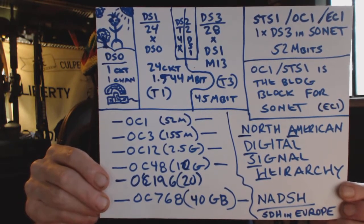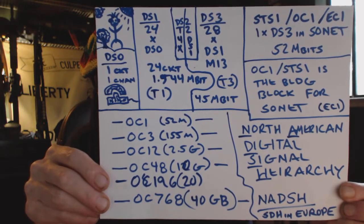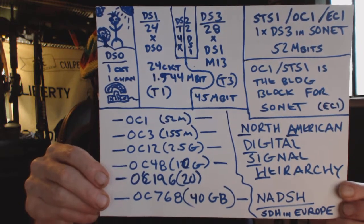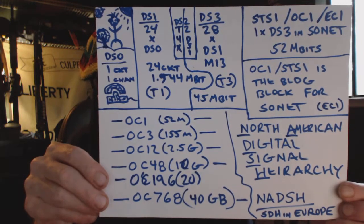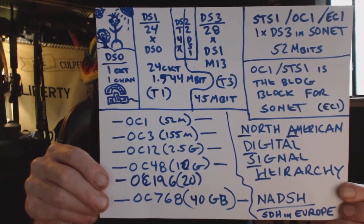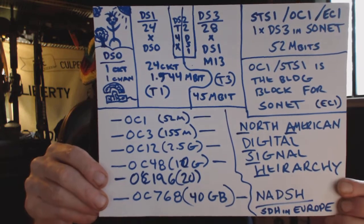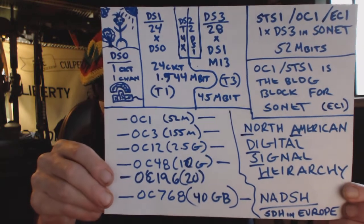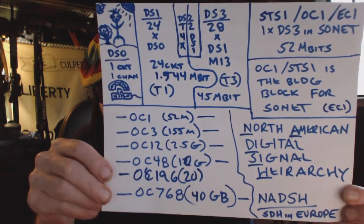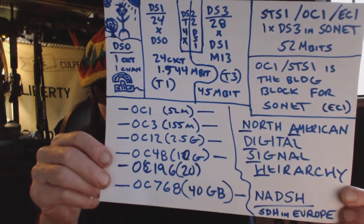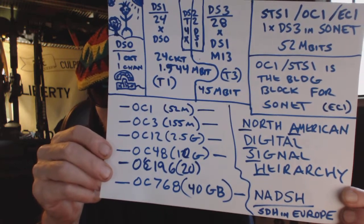So, we have OC1 52 megabits, OC3 155 megabits, OC12 2.5 gigabits, OC48 10 gigabits, OC196 20 gigabits, OC768 40 gigabits.